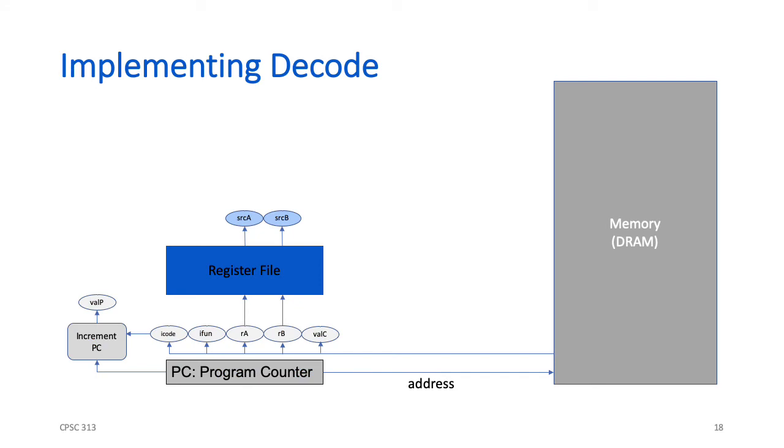The decode phase for Y86 is actually quite simple. We have a register file, and we've already taken out the parts of the instruction that define RA and RB. And we simply feed those into the register file and say, please read those registers and take the results and put those in source A and source B. So after decode, source A and source B contain the contents of the registers in question.